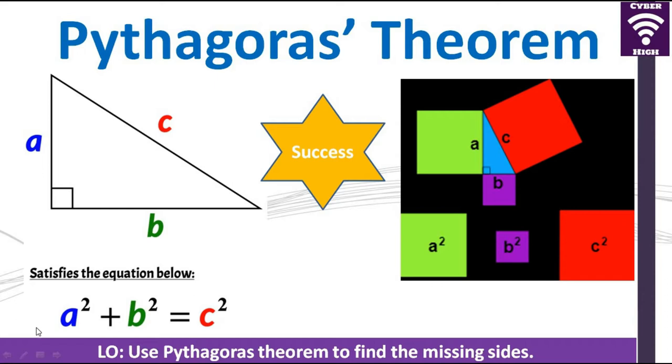This is a very important theorem used when you are working with right angle triangles. Remember, a triangle is right angled if one of its angles is 90 degrees.